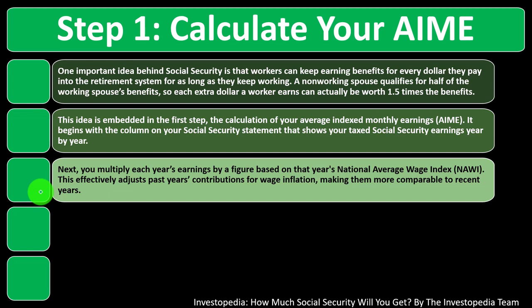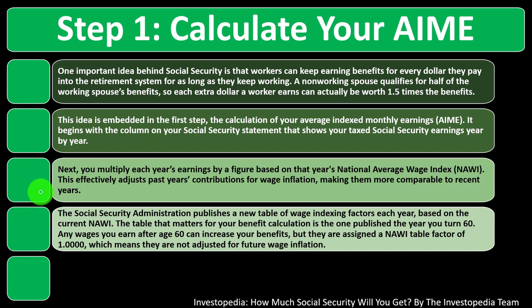Next, you multiply each year's earnings by a figure based on that year's national average wage index — the NAWI. This effectively adjusts past years' contributions for wage inflation. When you're looking at your lifespan, you can't say all the income was the same because there were purchasing power changes. You have to take inflation into consideration — time value of money — to make earnings more comparable to recent years. The Social Security Administration publishes a new table of wage indexing factors each year based on the current NAWI.